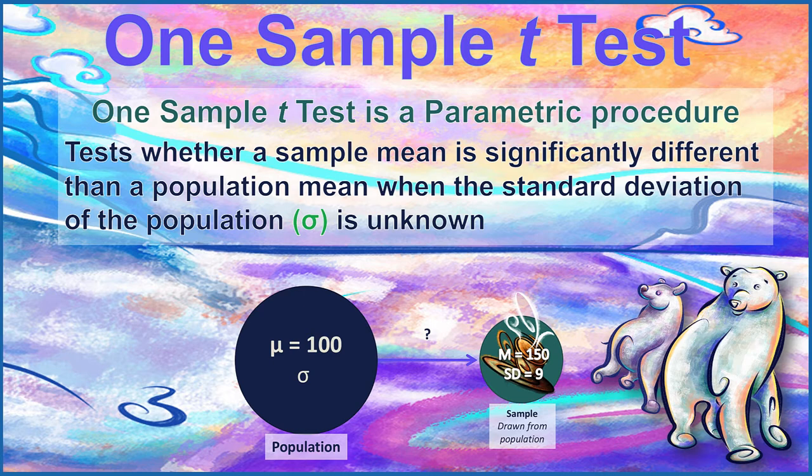So in this example with the polar bears, you can see that I have a population value of 100. I also have a sample which has a mean of 150 and a standard deviation of 9. I could use the standard deviation of 9 to estimate the population, and I would have to do that because I don't know the population standard deviation. However, because I'm estimating from the sample, I'm going to have to subtract 1 from my sample size when I determine my degrees of freedom.